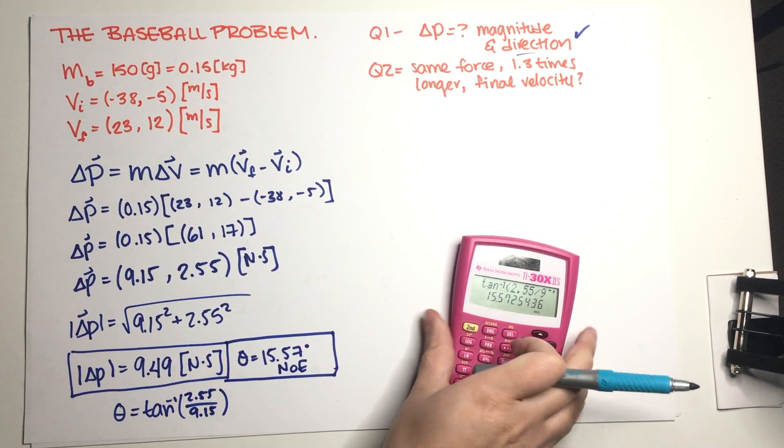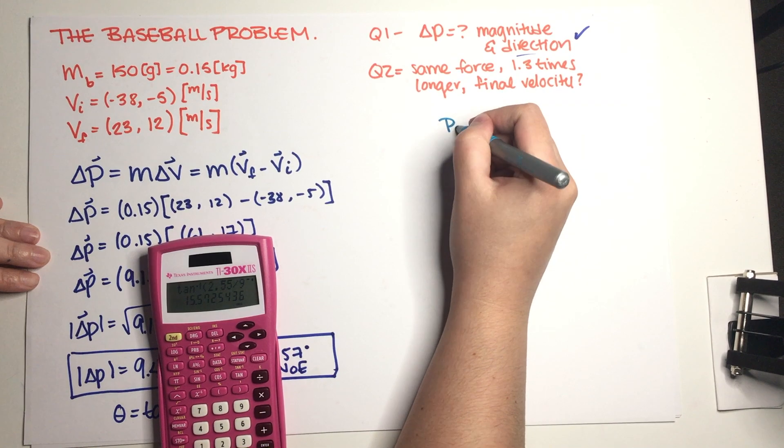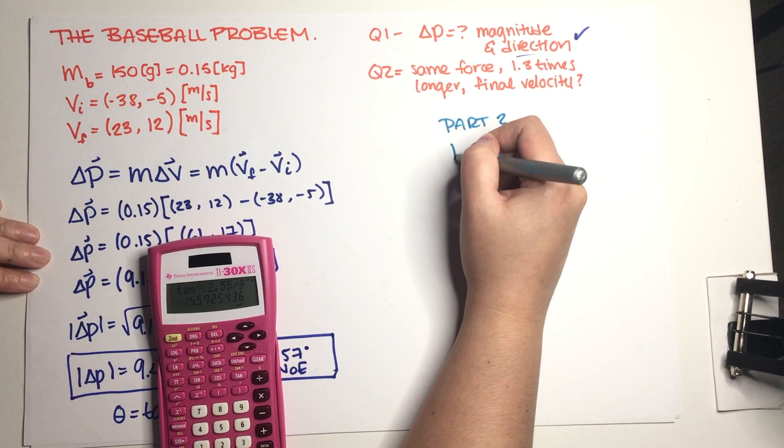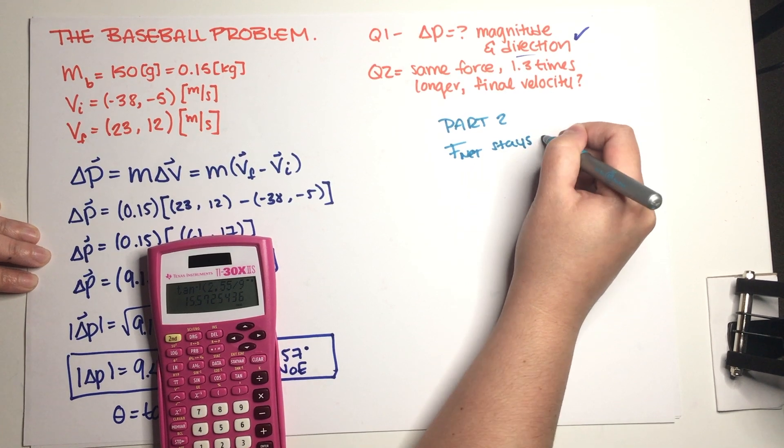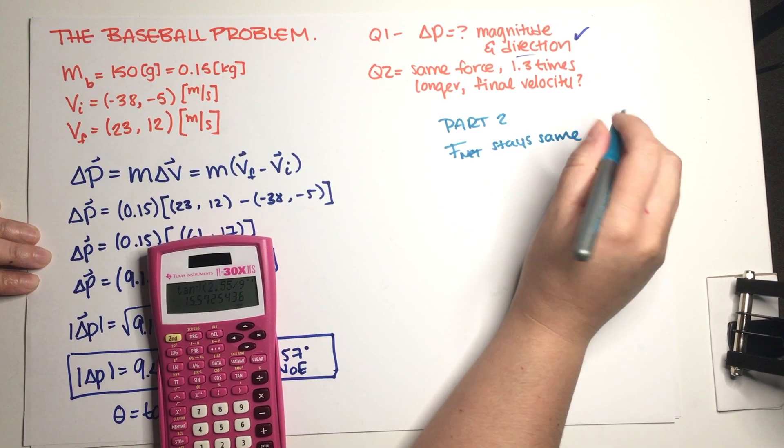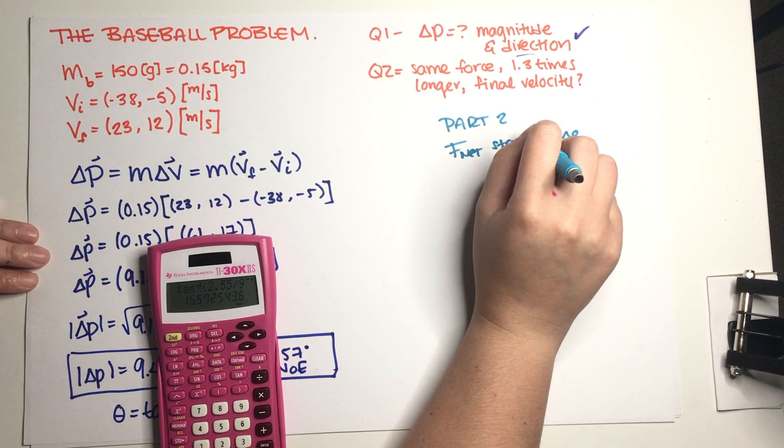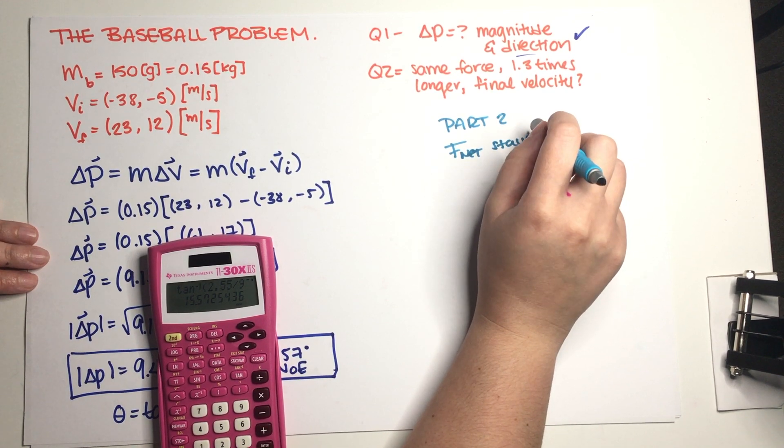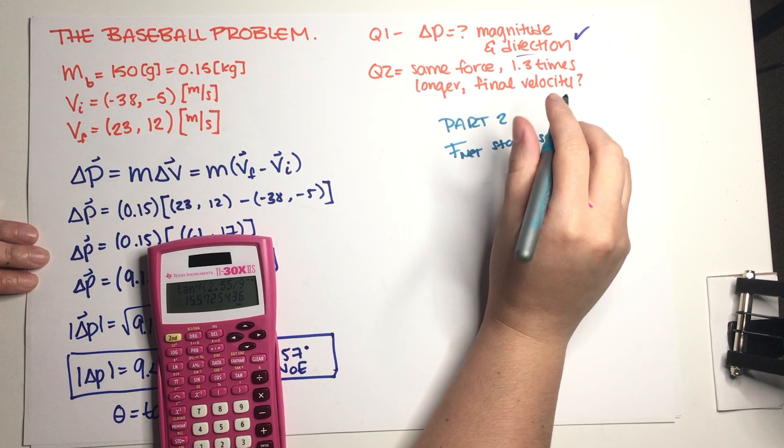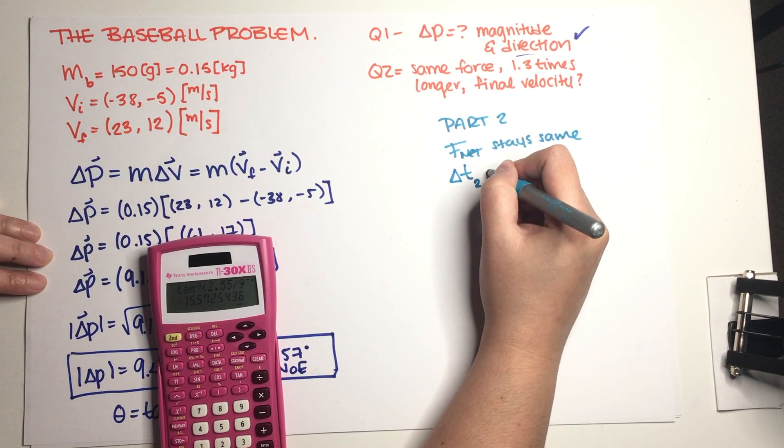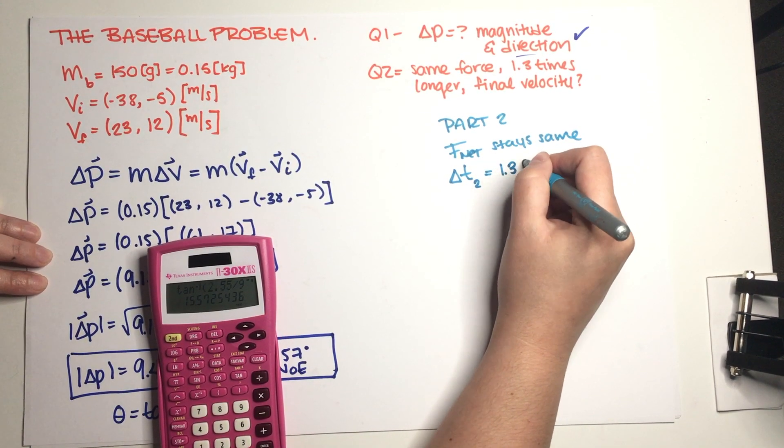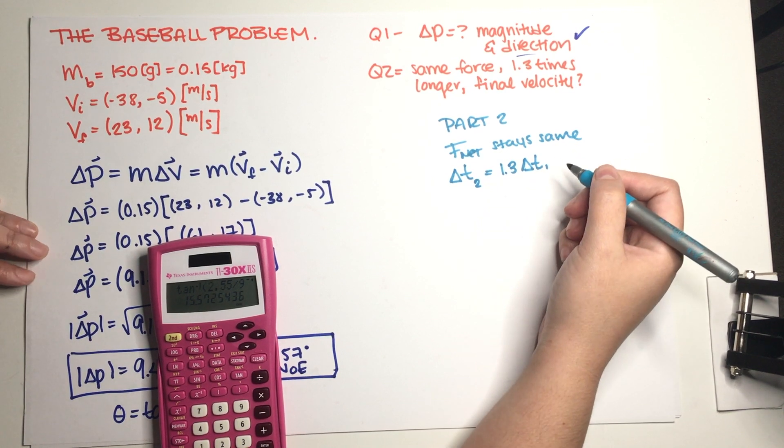Okay, so for part 2, F_net stays the same but manages to apply that force for 1.3 times longer than in part A. Okay, so delta t for part 2 is 1.3 times delta t from part 1. Now what is the final velocity of the ball?